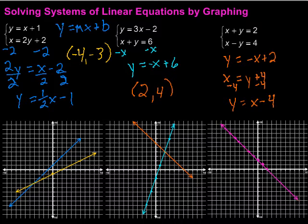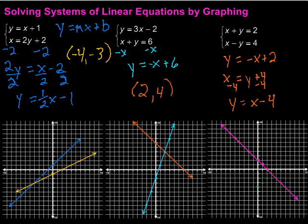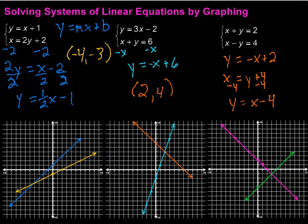For the second equation, y equals x minus 4, I start at the y-intercept of negative 4. With slope 1, I go up 1 over 1 to get all my points, then draw the line. The lines cross at one point. In this case, that point is over 3 and down 1, so the solution is (3, negative 1).